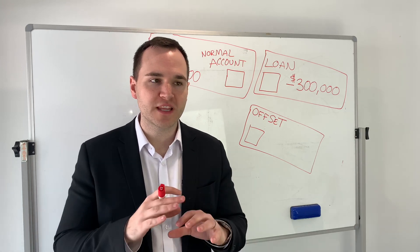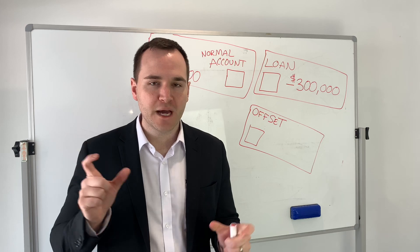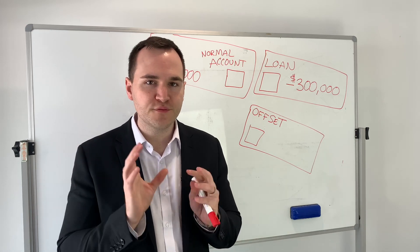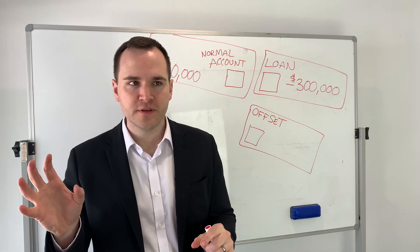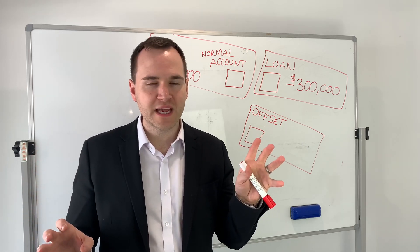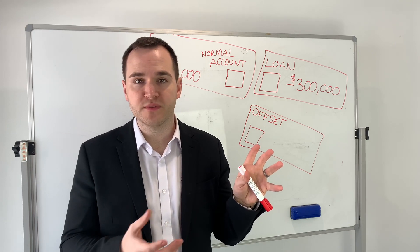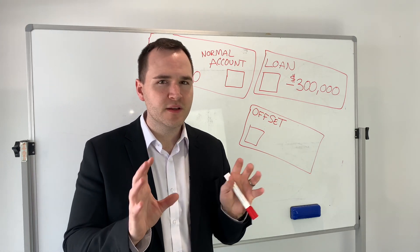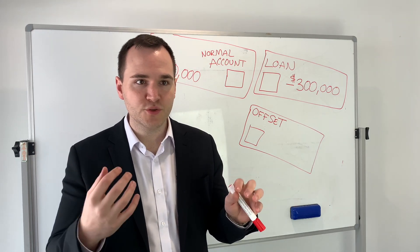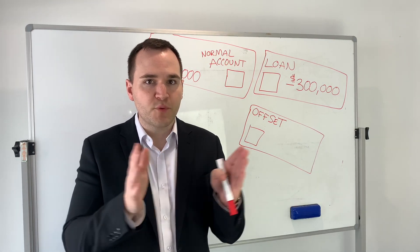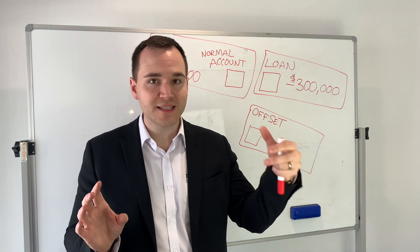Long story short, the question was: Eddie, how does your accounts look when you buy your first investment property or multiple, and you've got your loan and your normal account that your wage might go into? Do you need another account that rental income comes into?